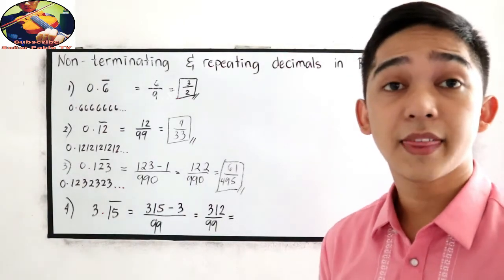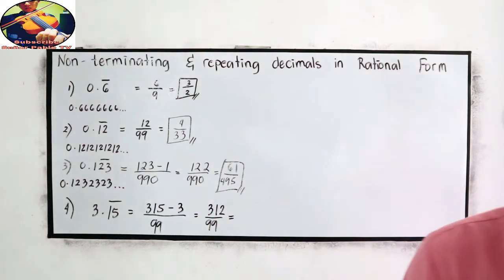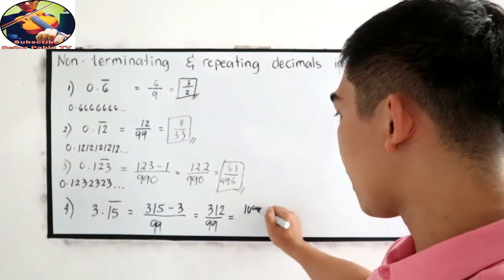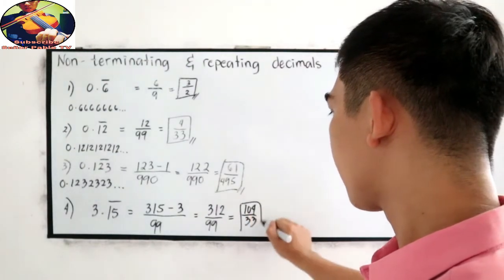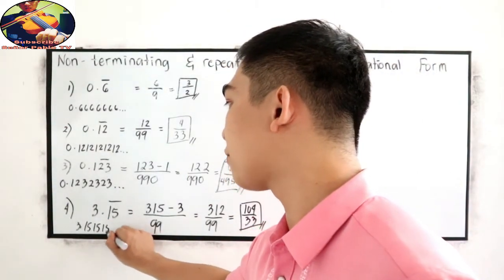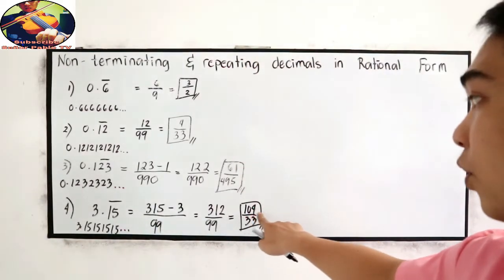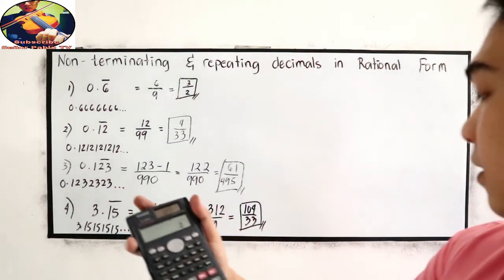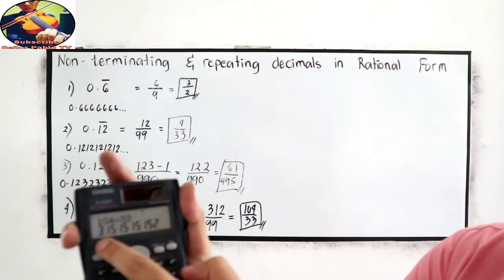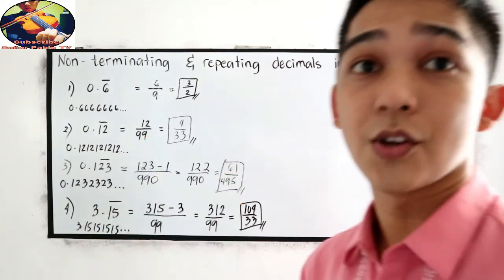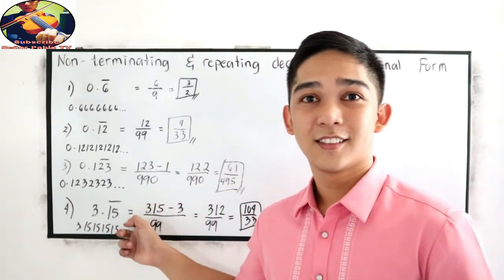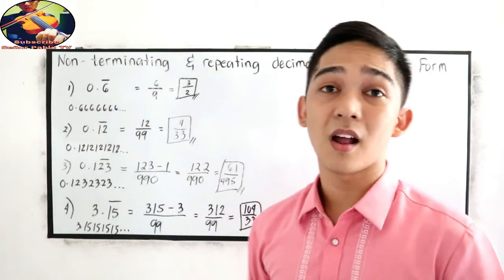312 over 99 is divisible by 3: 312 divided by 3 is 104, and 99 divided by 3 is 33, giving us 104 over 33. We know this should equal 3.151515 and so on. Let us check: 104 divided by 33 gives 3.151515151515. Correct. That is how to write non-terminating and repeating decimals into rational numbers.